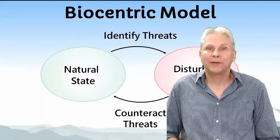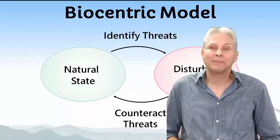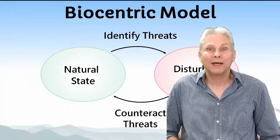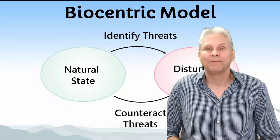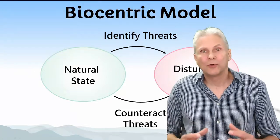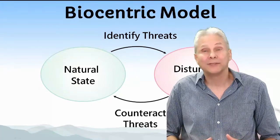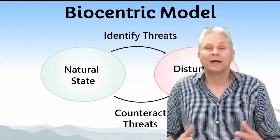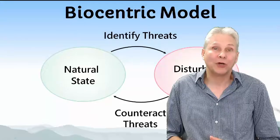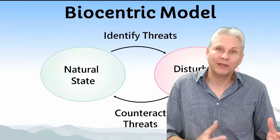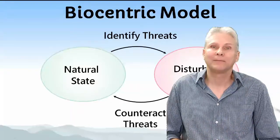Together, these three steps comprise the biocentric model of conservation. There's one core goal, and that is conserving biodiversity. Basically, the job is to determine what's gone wrong and then fix it.